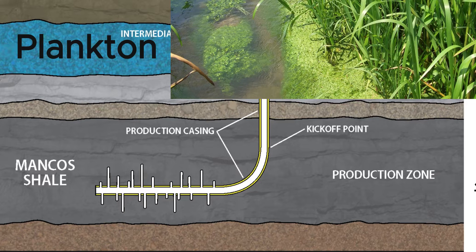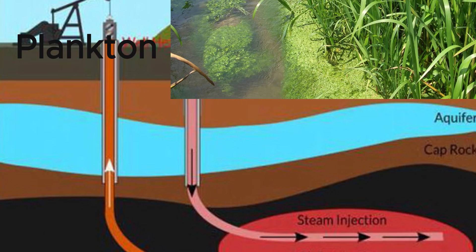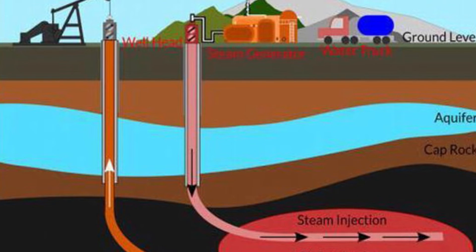The formation of oil is a multi-stage process involving the accumulation of organic material, burial and sedimentation, transformation into kerogen, breakdown into hydrocarbons, and migration and trapping in reservoir rocks. This process takes millions of years and requires specific geological conditions to transform organic material into the oil that we extract and use today.